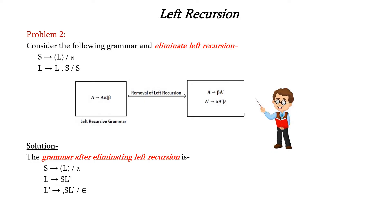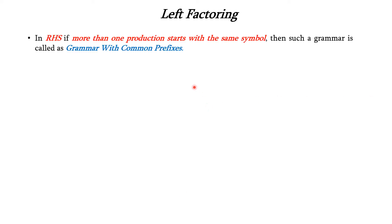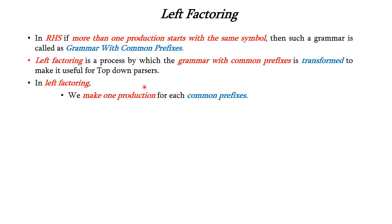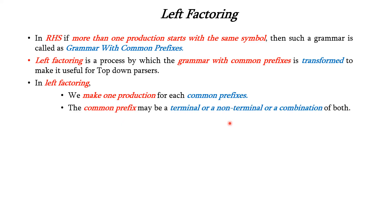Thus we have seen the concept of left recursion. Next we will see about left factoring. In the right hand side, if more than one production starts with the same symbol, then such a grammar is called a grammar with common prefixes. Left factoring is the process by which a grammar with common prefixes is transformed to make it useful for top-down parsing. In left factoring, we make one production for each common prefix. The common prefix may be a terminal, a non-terminal, or a combination of both.